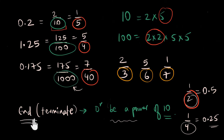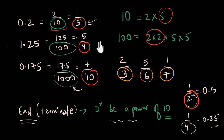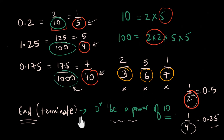Let's summarize: if we want a terminating decimal, we need a fraction with a power of 10 in the denominator. If we don't have that, at least the denominator should have only 2s and 5s as its prime factors. If we have anything else as a factor, we won't get a terminating decimal. Just by looking at the denominator, we can figure out whether the decimal ends or not — isn't that amazing?